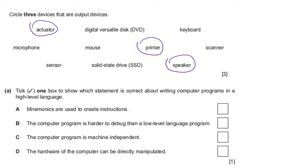Tick one box to show which statement is correct about writing a computer program in high level language. Mnemonics are used to create instructions — false, that is used in assembly language (a low level language). The computer program is harder to debug than low level language — false, high level language is easier to debug. The computer program is machine independent — true. The hardware of the computer can be directly manipulated — false. The correct option is C: machine independent.